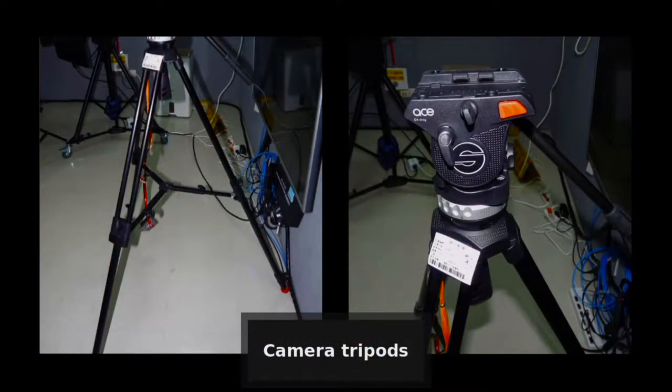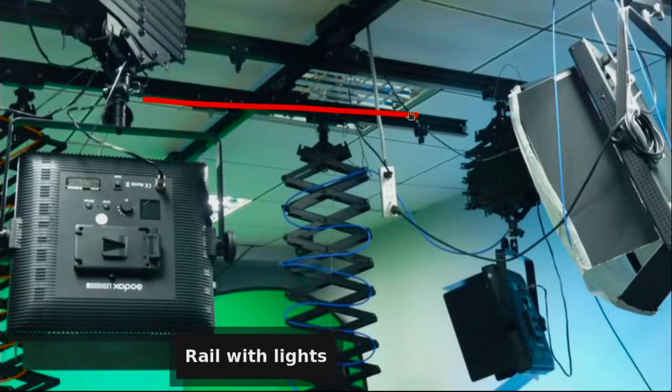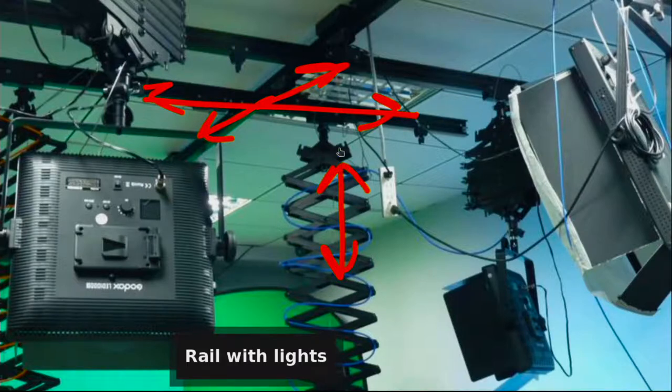Now the next thing we have is lights. So here we have lights hanging from our ceiling, and in our lab, like in many studios, you have lights that can move. These rails here can move left and right, and forward and back, and then these arms that hold microphones and lights can move up and down, and they can of course move on the rail also.